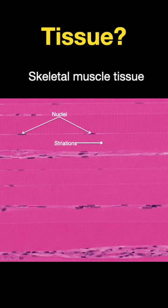What tissue is shown here? The answer: skeletal muscle tissue, because you can see the striations.